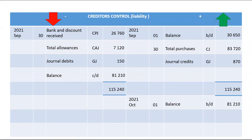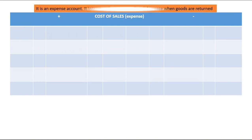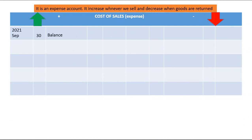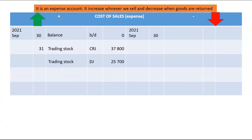Now let's do cost of sales. Cost of sales increases at cost price whenever we sell goods and decreases at cost price whenever goods are returned. It is an expense account, so it increases on the debit side. It is increased by trading stock — the cost price of goods sold for cash — found in the CRG under the cost of sales column, totalling 37,800. When goods are sold on credit, recorded via the debtors journal, the cost price is 25,700.